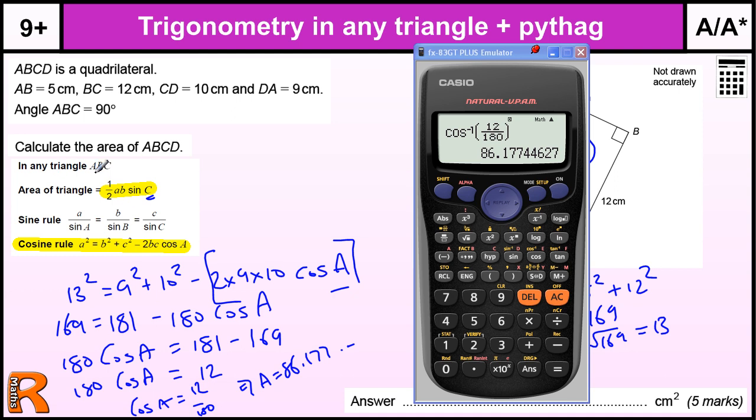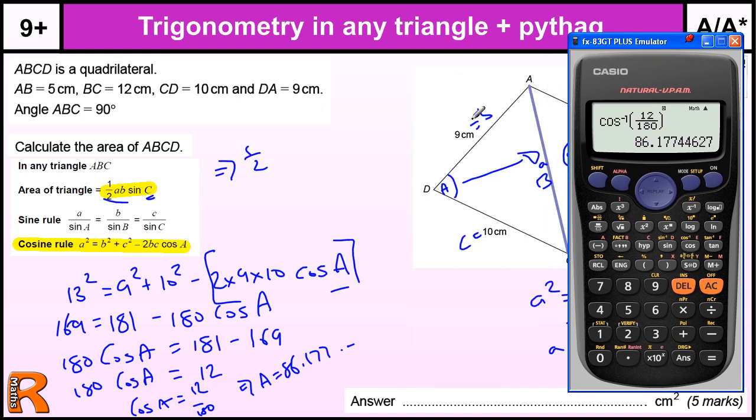Now we're going to use that value if you leave it in the calculator in this formula for the area of the triangle. So a half of AB. Remember A and B are not the same A and B in this one, they're the two sides either side of the angle that we're using. We're using this angle here so it's going to be 9 and 10. So it's a half of 9 times 10 times the sine of that 86.177. So we've got that, we're going to use the sine of that answer, and we're going to times that by a half of 9 times 10 which is 45.